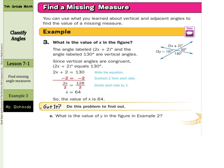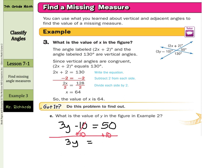We can use the same approach to find y. The expressions 3y − 10 and 50° are vertical angles since they are opposite and share a common vertex. So 3y − 10 = 50. Add 10 to both sides to get 3y = 60, then divide by 3 on both sides. We're left with y = 20.